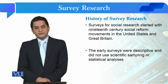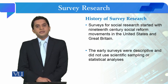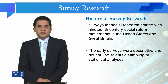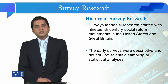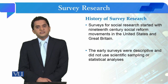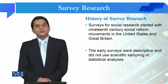Early survey researches were descriptive in nature and did not use scientific sampling or statistical analysis. There was no scientific way of sampling. Social scientists interviewed people about various social issues and social problems, analyzing them in a descriptive narrative form. They did not follow probability theory, nor was any sampling frame developed.